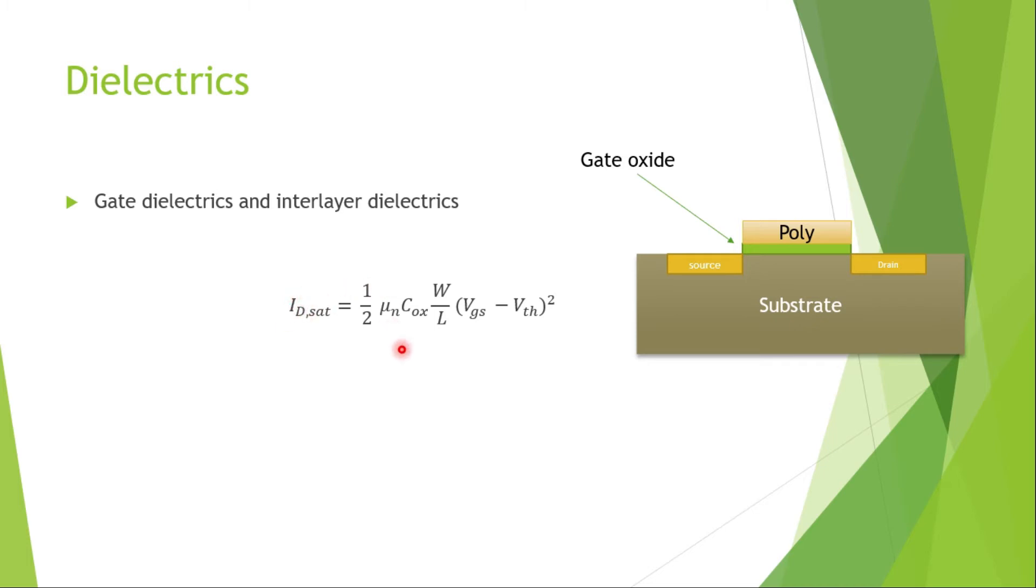So what if we want to increase the speed of the device? We want to make this current increase. To increase the drive strength, we have to increase this current, which we can increase by design through W by L, increasing W, and we can increase the oxide capacitance.